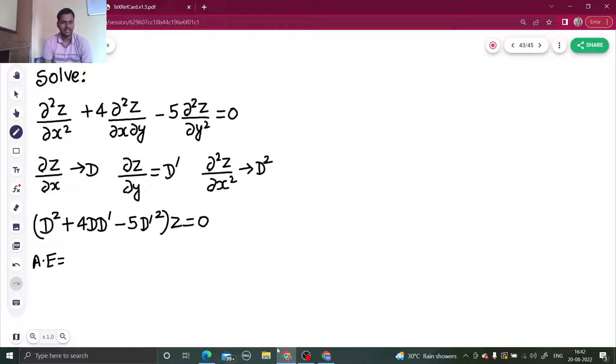How we write that? Just two things are there: replace capital D by m and D dash by 1. So if you do so, you will get m² + 4m - 5.